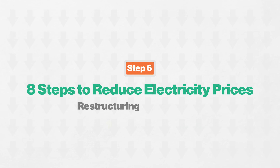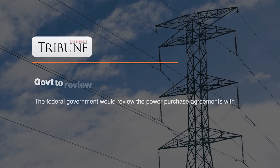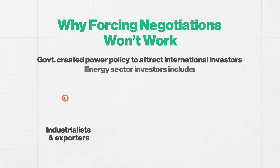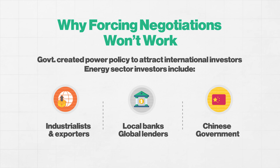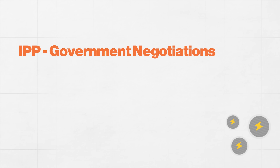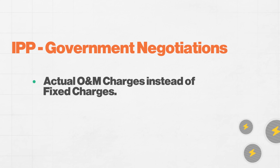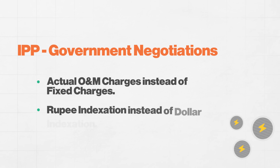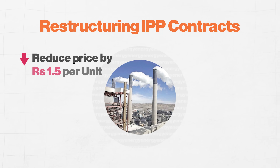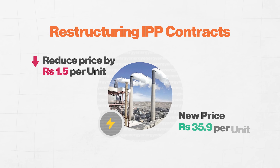Number six: IPP contracts restructuring. This is not an ideal move, and we have discussed capacity payments before. We need to renegotiate our sovereign contracts, which has a negative impact on investment reputation. But the goal has come from the Chamber of Commerce, and these negotiations have already started. The changes will convert fixed O&M charges to actual O&M charges, remove dollar indexation, and replace it with rupee indexation. This will save approximately Rs.1.50 per unit. The new price is Rs.35.90 per unit.